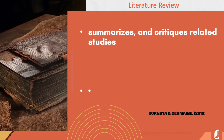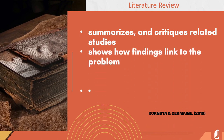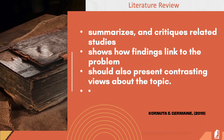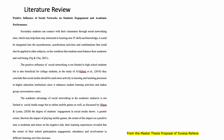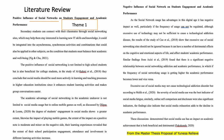A good literature review summarizes and critiques related studies, and shows how their findings link to the problem being investigated. A good literature review should also present contrasting views about the topic. The current trend in the presentation of a literature review is topical or by themes. Contrasting views can be seen in the example, which is considered good practice in writing your literature review.